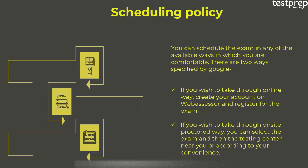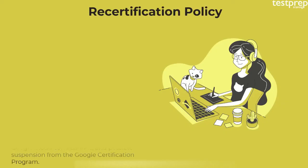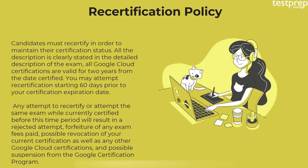Recertification policy: Candidates must recertify in order to maintain their certification status. All Google Cloud certifications are valid for two years from the date certified. You may attempt recertification starting 60 days prior to your certification expiration date. Any attempt to recertify before this time period will result in a rejected attempt, forfeiture of exam fees paid, possible revocation of your current certification and any other Google Cloud certifications.